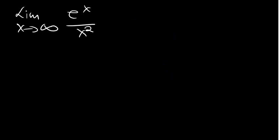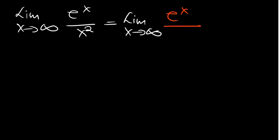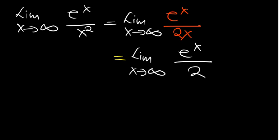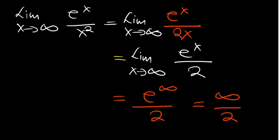Applying L'Hôpital's Rule: derivative of eˣ is eˣ, derivative of X² is 2X — still infinity over infinity. Differentiate again: eˣ remains eˣ, and 2X differentiates to 2. Now we have e^∞ over 2. Since eˣ → ∞ and the denominator is the constant 2, infinity divided by a constant is infinity. So the limit is infinity.